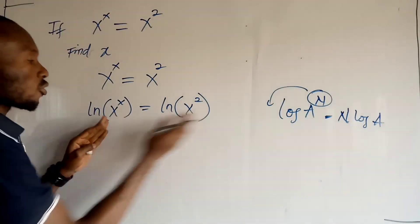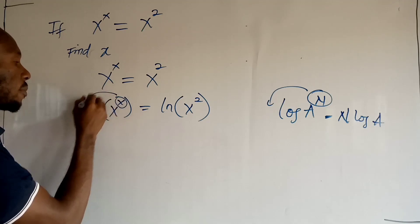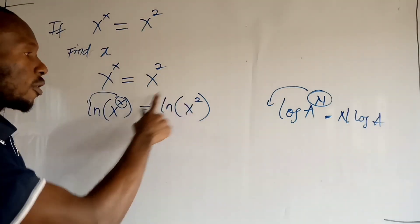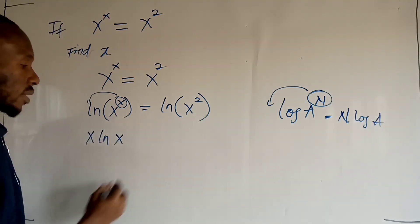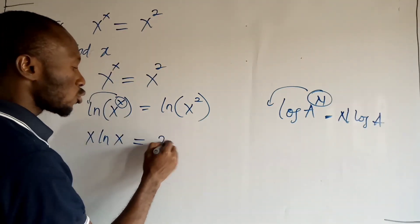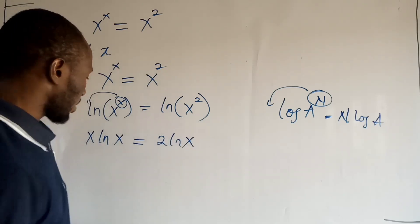Now if I apply this law right here, this is in power, it's going to fall behind. And this also is going to fall behind the logarithm. So I have it to be x ln x, then it's equal to 2 ln x.